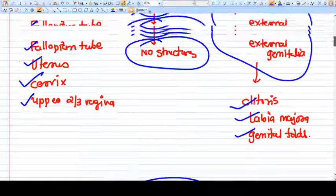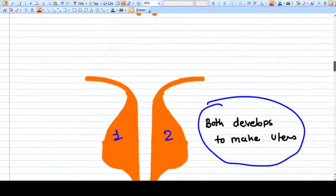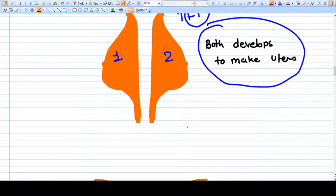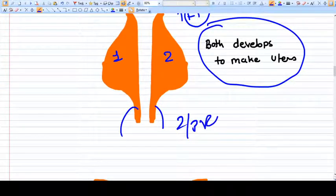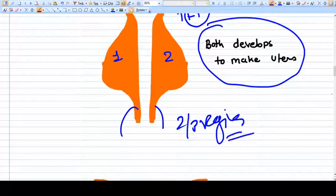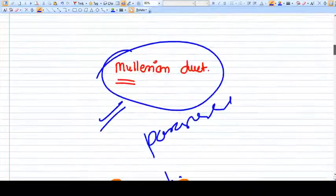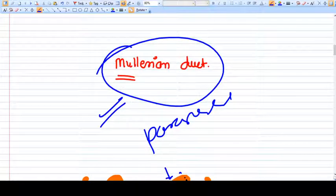This upper part of the mullerian duct will develop into fallopian tube. And this lower part will be developed into the upper two-thirds of vagina. So this is how the female part is developed in very basic concept. Thank you.